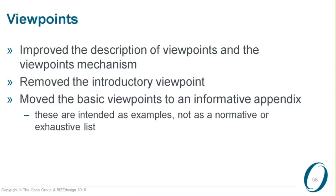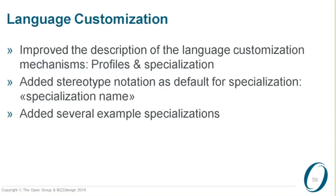The viewpoints are now moved to an appendix. A similar improvement is that we have a better description of the notion of language customization. We have this chapter on profiles and specializations, but we've explained that a bit better. We also added a default notation for this with the stereotype notation that some of you might know from UML — with these guillemets, these angled brackets, to denote the name of the specialization. And there's also a list of all kinds of example specializations that might be useful to you, just to show how you can use this in practice.